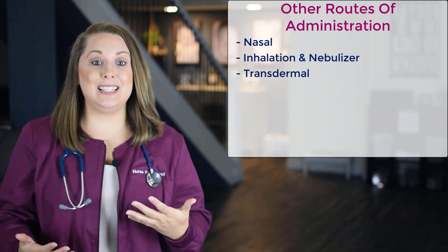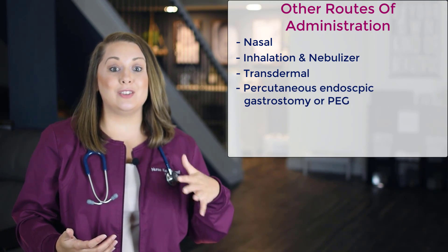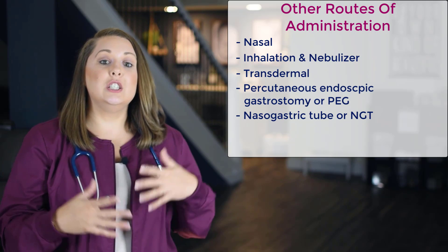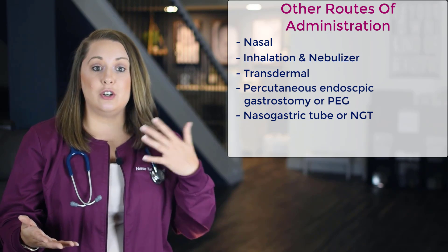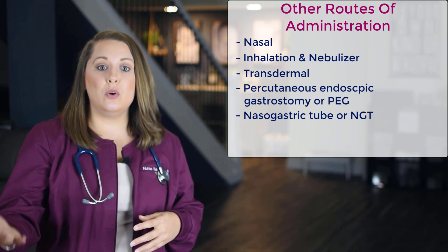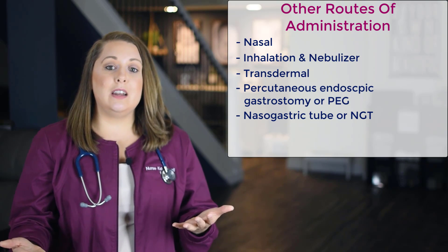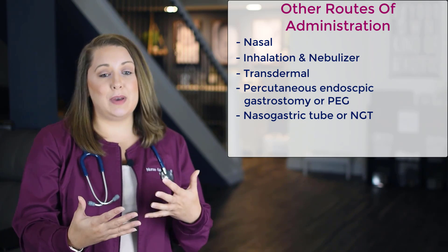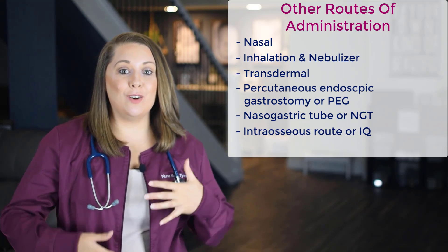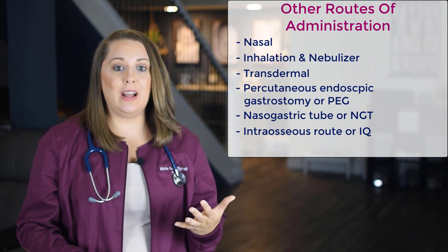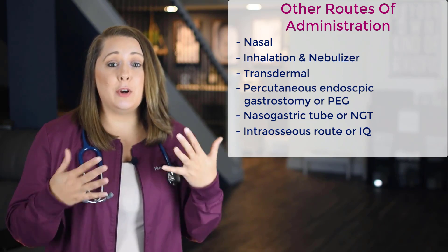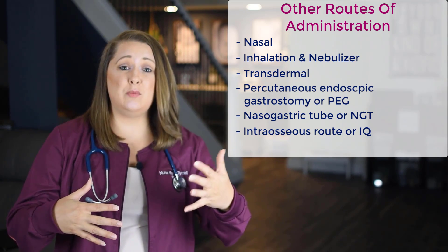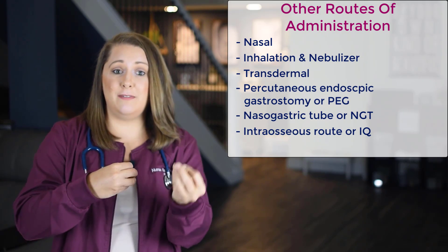Another common route is through a tube, such as a percutaneous endoscopic gastrostomy or PEG tube, and a nasogastric tube or NGT. Since these tubes are placed directly into the stomach, you can give any oral liquid form of medication — which is preferred — or any crushable tablets mixed with water. You may also see an intraosseous route or IO, where a needle is placed directly into the patient's bone marrow. This is typically only used in emergency situations like a code blue, as it carries the highest risk for infection since it introduces a foreign object into the bone marrow where infection-fighting cells are made.